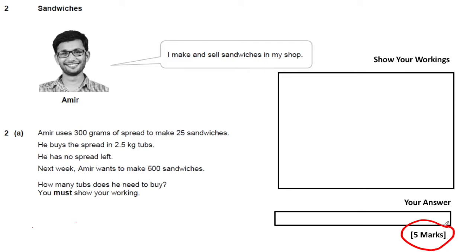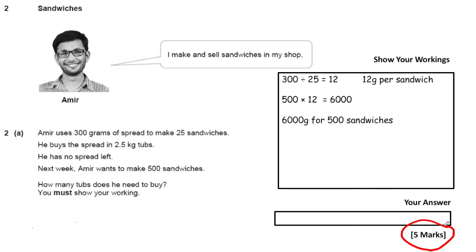First we have to work out how many grams of spread Amir uses to make one sandwich. We take the 300 grams and divide it by how many sandwiches he got out of that 300 grams — 25 sandwiches. So 300 divided by 25 equals 12. That's 12 grams of spread per sandwich.